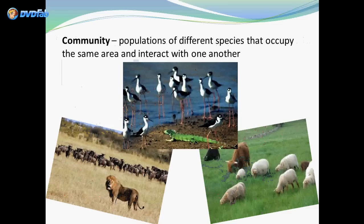Then there's a community. Communities are populations of different species that occupy the same area and interact with one another — like the lions and the wildebeest, the sheep and the cows, etc., as shown in these pictures.